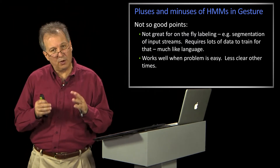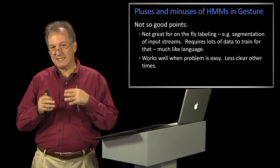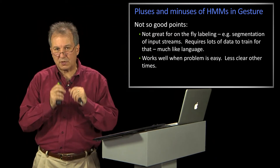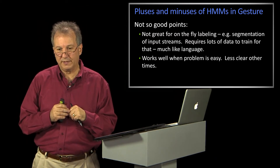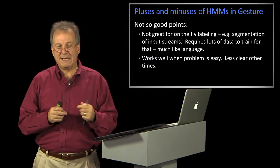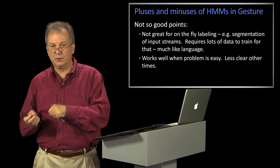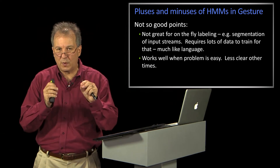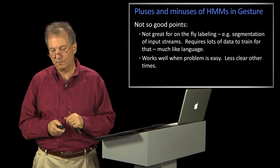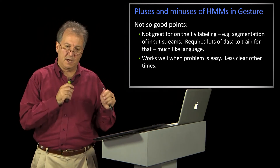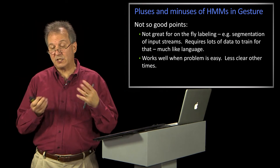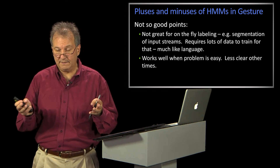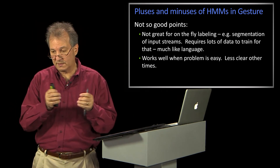That's probably true of most classification methods — when the problem is easy, they all work great. It's when the problem is not so easy that the challenge comes in, and that's when people start reporting on small differences. The real issue in choosing your classifier is to understand where the complexity and difficulty of your problem is. But in general, people still use HMMs a lot for describing activity or time series.